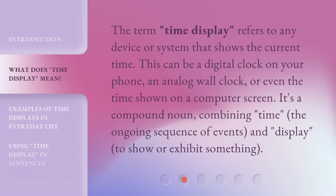The term 'time display' refers to any device or system that shows the current time. This can be a digital clock on your phone, an analog wall clock, or even the time shown on a computer screen. It's a compound noun, combining 'time' — the ongoing sequence of events — and 'display' — to show or exhibit something.